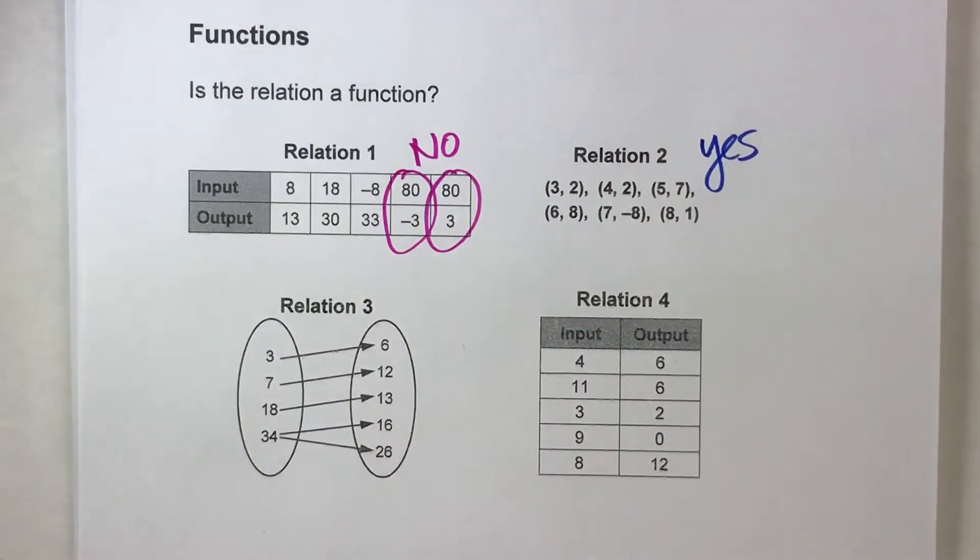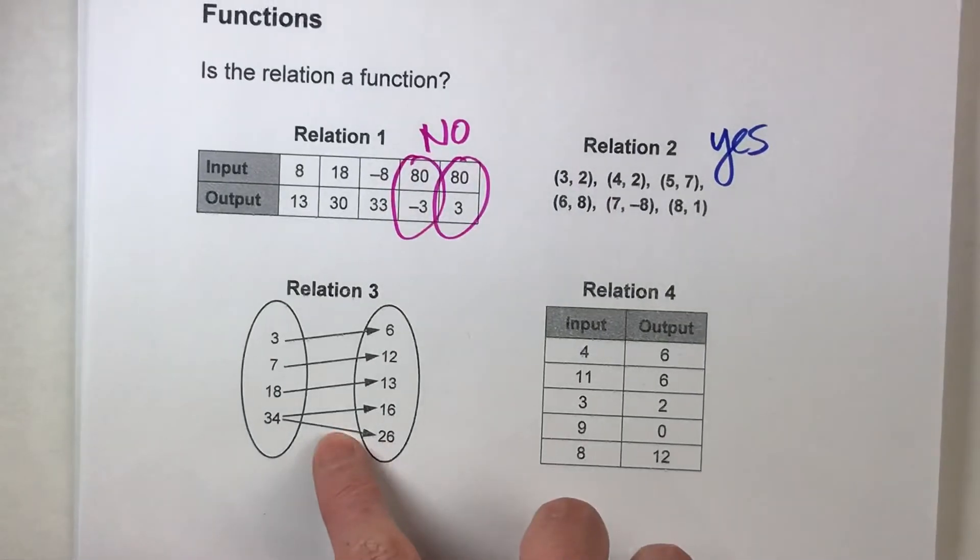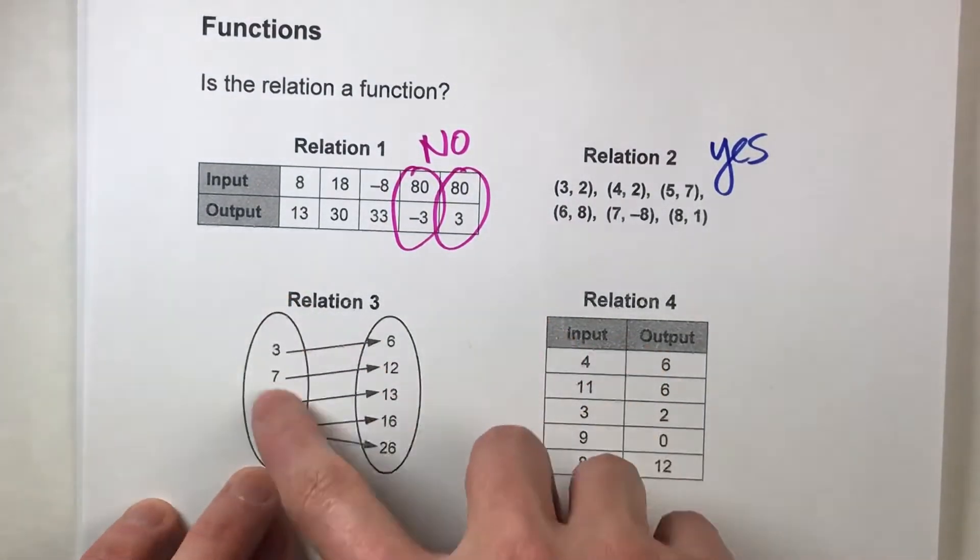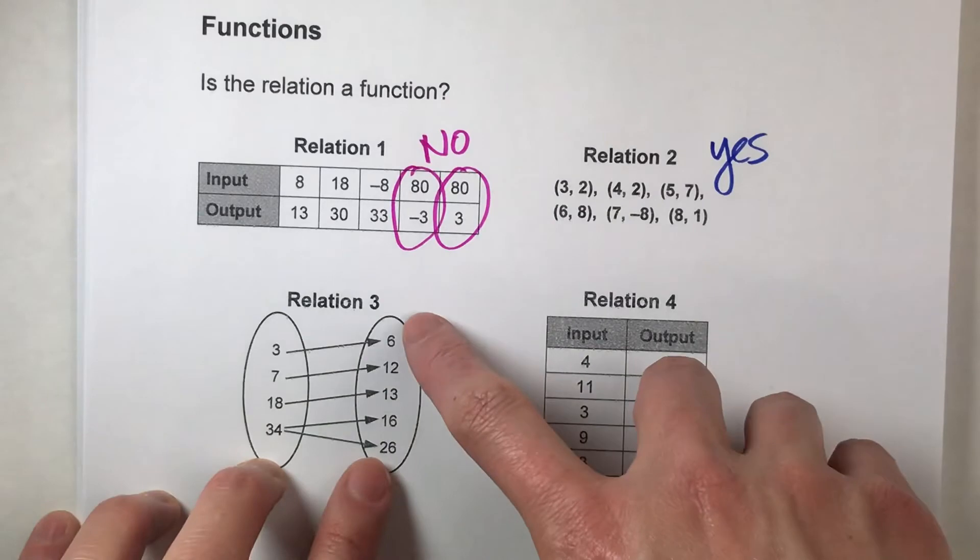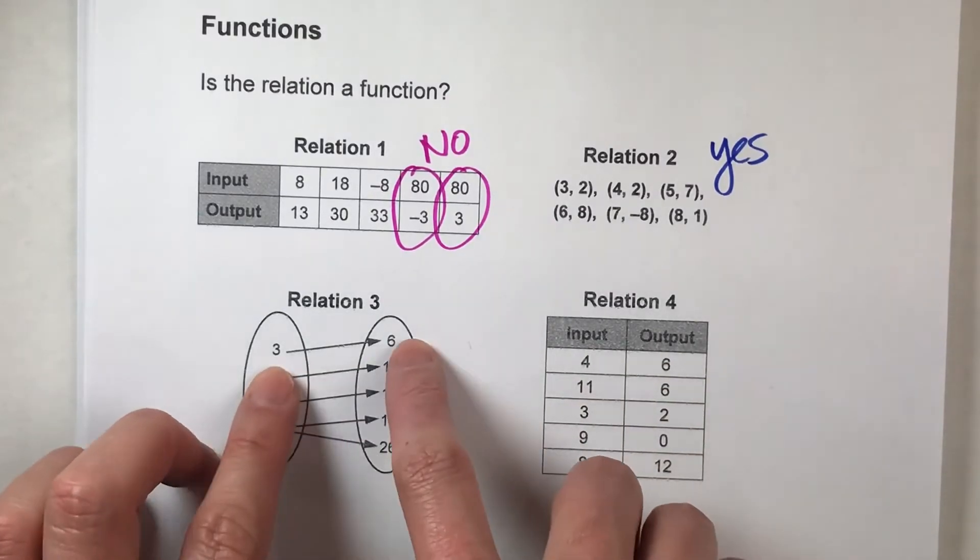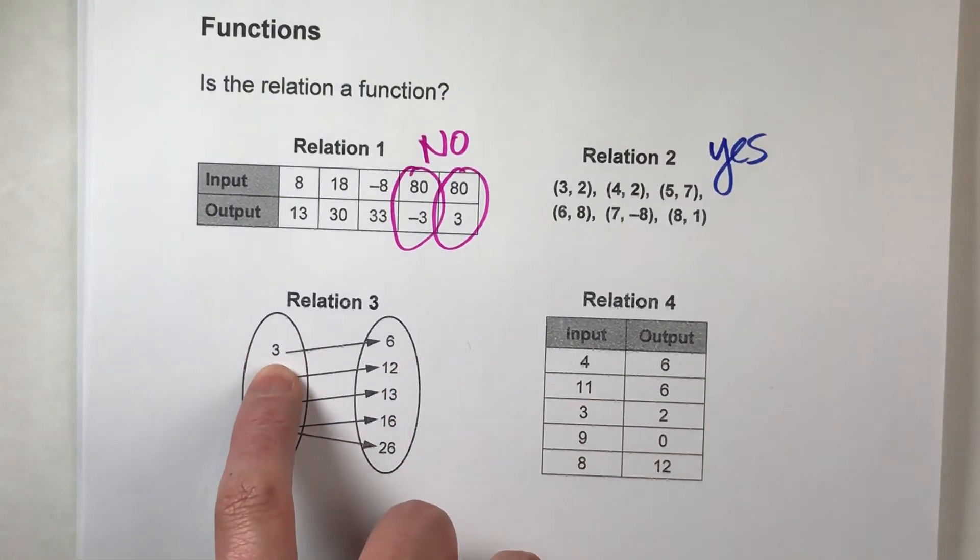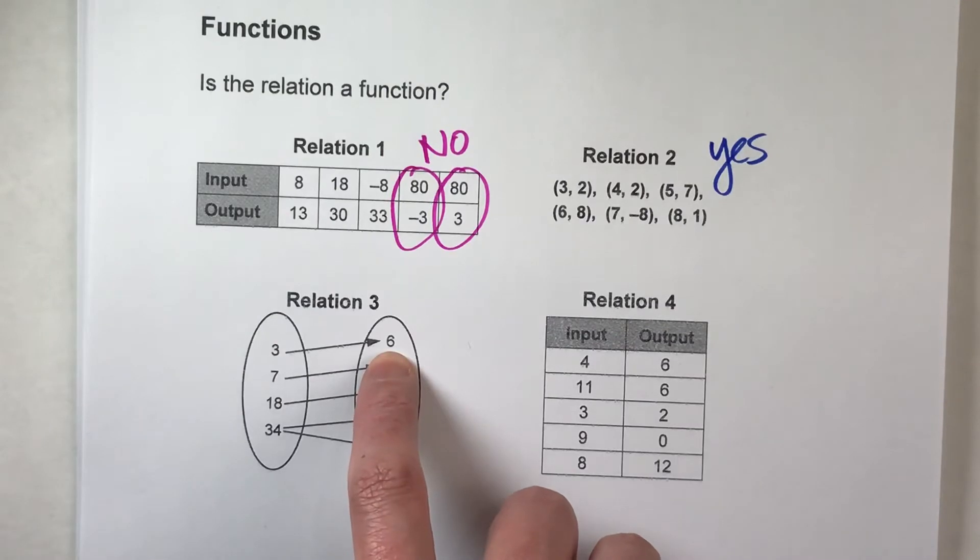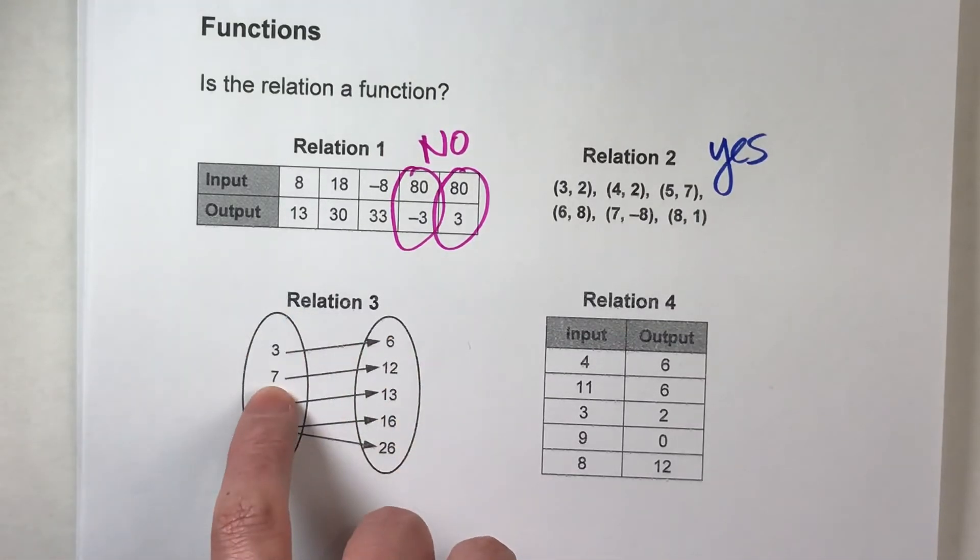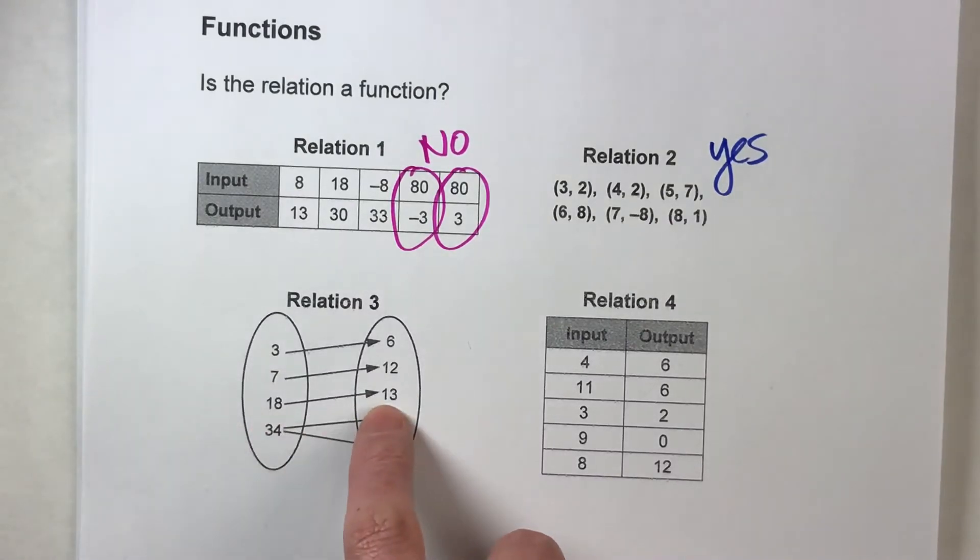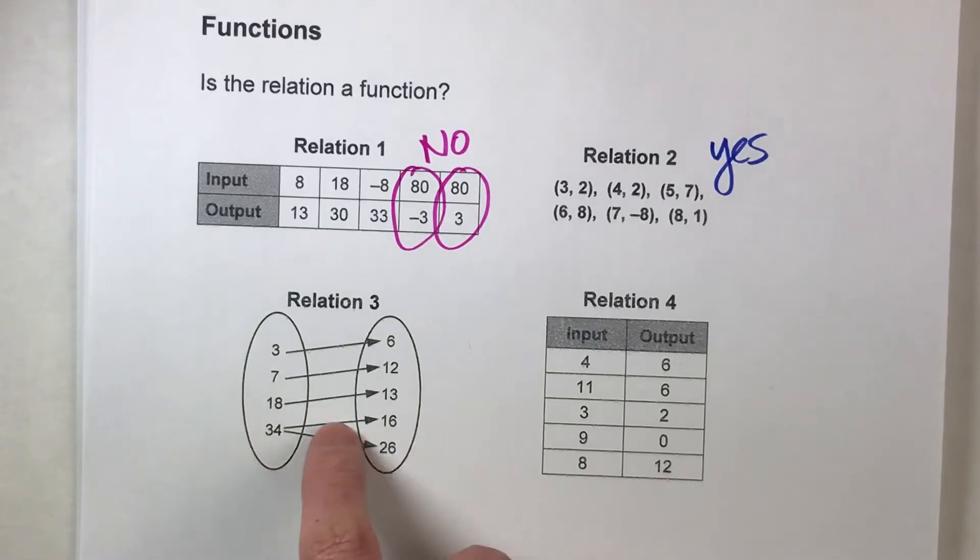Let's do example 3. So in this example the arrow diagram, the first set of numbers are your inputs. The second ones are your outputs and you know that because of the arrow. It's basically saying my input of 3 gives us an output of 6. An input of 7 gives us an output of 12. The input of 18 gives us an output of 13. And then the input of 34 gives us both 16 and 26.